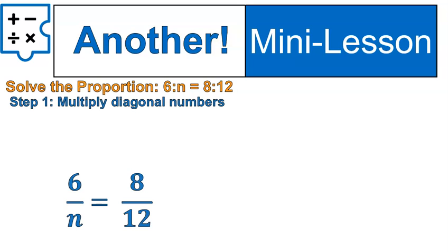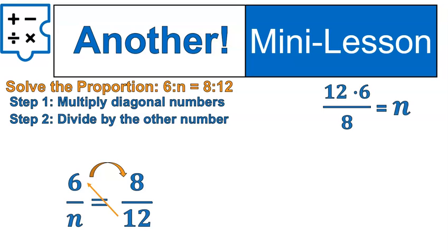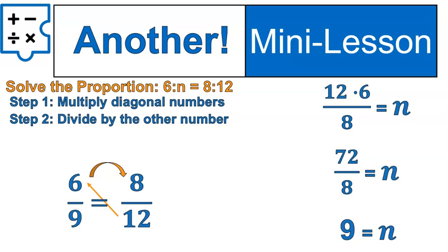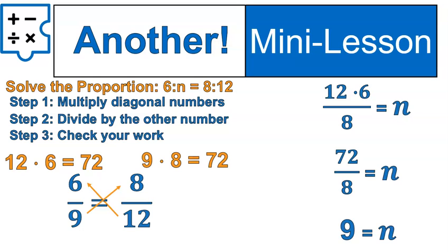Step number one: multiply the numbers that are diagonal. The n is diagonal to 8, and 6 is diagonal to 12. Then we're going to divide by the other number. The last leftover number is 8, so we divide by that, and that will give us our value for n. Here's how we would set it up: 12 times 6 divided by 8. 12 times 6 is 72, and 72 divided by 8 equals 9. Now I'm going to substitute the value of 9 in for n, and we see that 6 over 9 equals 8 over 12. Just to be safe, I'm going to double-check my work using cross-multiplying. 12 times 6 is 72, and 9 times 8 is 72. 6 to 9 equals 8 to 12. They are proportional.